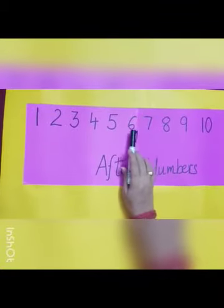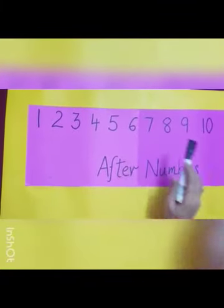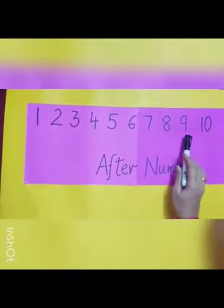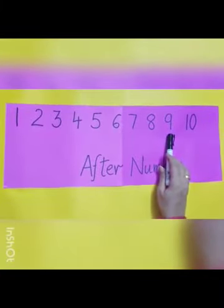7 will come after 6, and 10 will always come after 9. So, these are called after numbers.